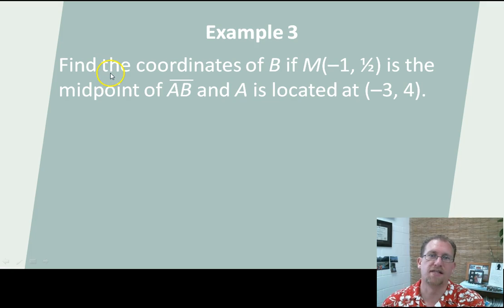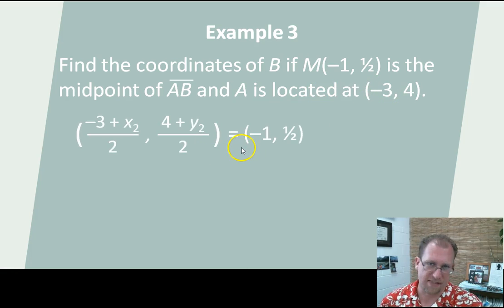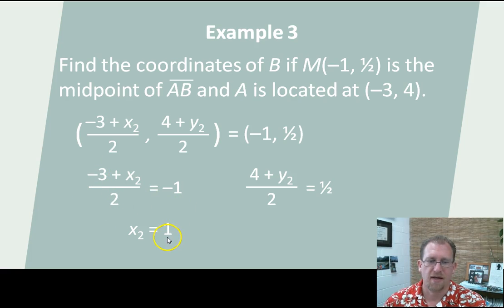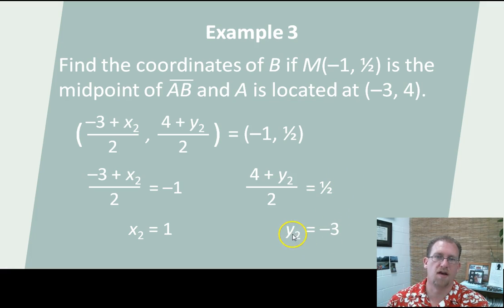Find the coordinates of B if M(-1, 1/2) is the midpoint of AB and A is located at (-3, 4). Now I'm going to use that same idea and go backwards. I'm going to say that (-1, 1/2) is the midpoint. I've got to solve this equation to equal -1 and this equation to equal 1/2. I can multiply both sides by 2 and then bring the -3 over by adding 3 to both sides, and I wind up with x₂ equaling 1. Then 4 plus y₂ divided by 2 equals 1/2. Multiply both sides by 2, subtract 4 from both sides, and I wind up with y₂ equals -3. So my second point is (1, -3).